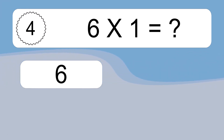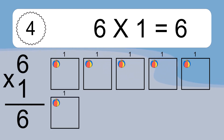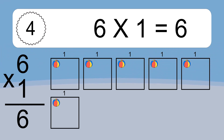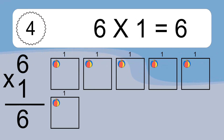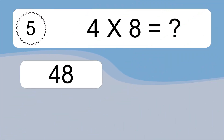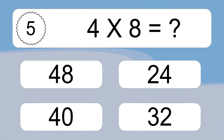6 times 1 equals what? 6 times 1 equals 6. We have 6 boxes, and each box has 1 colorful ball inside. If you count all the balls in all the boxes together, you will have 6 times 1 balls. This equals 6 balls.